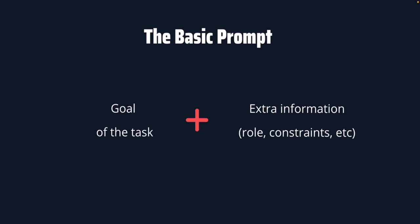The extra information we give is part of what we're going to learn in prompt engineering. For example, there's a technique called role prompting, and that is the extra information we add when using it. There are also constraints to set limitations on the task. Now let's create a basic prompt and compare what happens if we only give the goal versus giving the goal plus extra information.